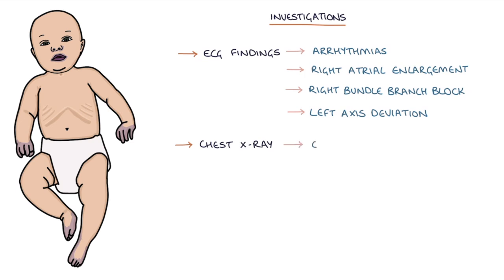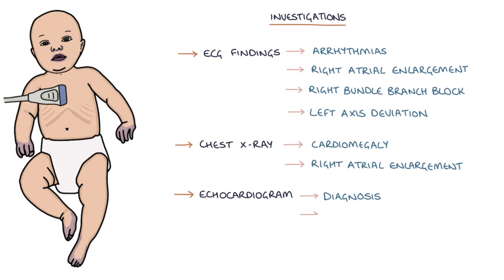Chest x-ray findings might include cardiomegaly and right atrial enlargement. An echocardiogram is the investigation of choice for confirming the diagnosis and assessing the severity.